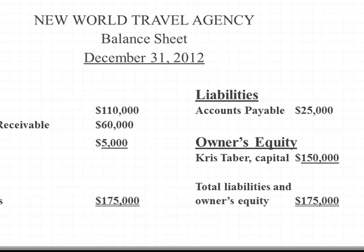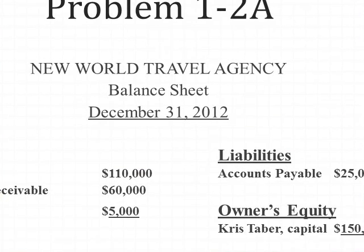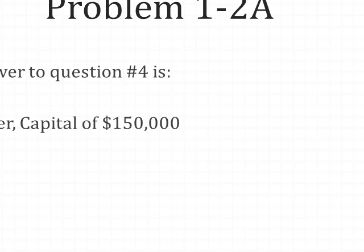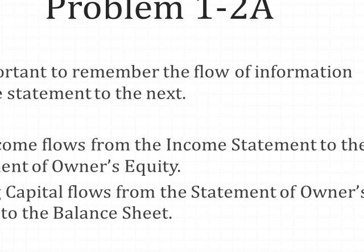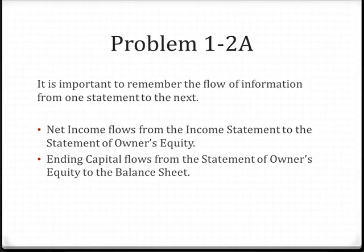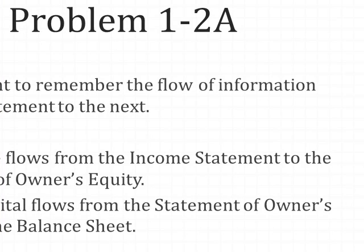Question four asks what item appears on both the statement of owner's equity and the balance sheet. That item is Chris Tabor capital of $150,000. The ending capital appears on the statement of owner's equity and feeds into the balance sheet. It's important to remember the flow of information from one statement to the next: net income flows from the income statement to the statement of owner's equity, and the ending capital flows from the statement of owner's equity to the balance sheet. This concludes problem 1-2A.